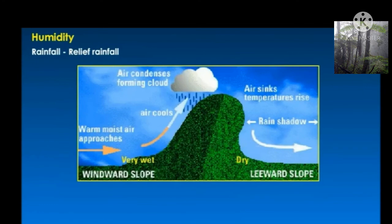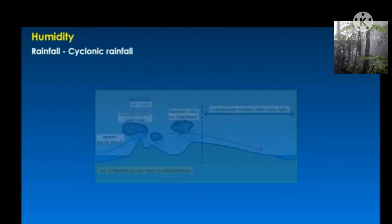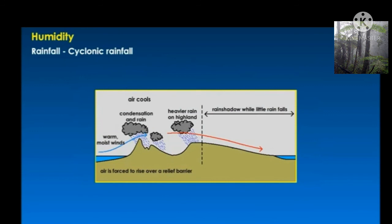Relief rainfall: when relief features such as mountains come in the way of a moist wind, the wind is forced to rise up the mountain. The rising wind starts cooling, condensation takes place, and clouds are formed. Cyclonic rainfall: cyclones are centers of low pressure. The air converges from all directions towards the low pressure and is forced to rise up. The rising air gets cooled, condenses, and clouds are formed, which ultimately bring rainfall.